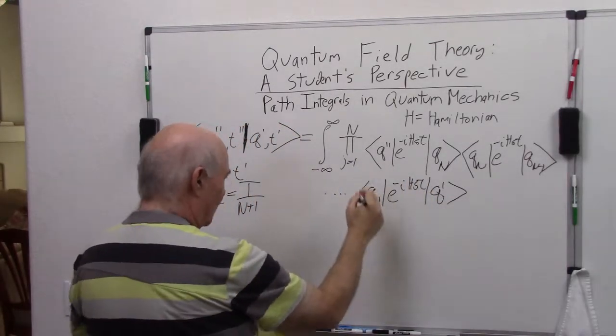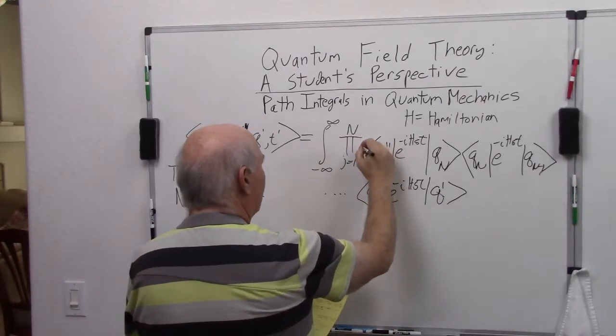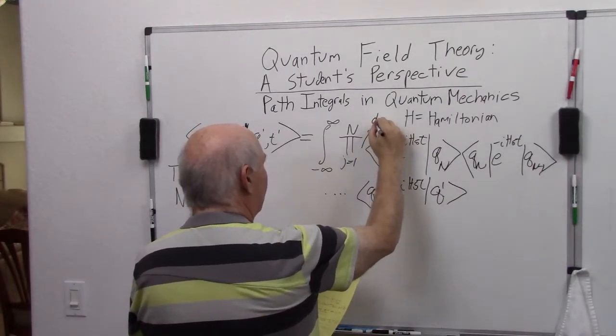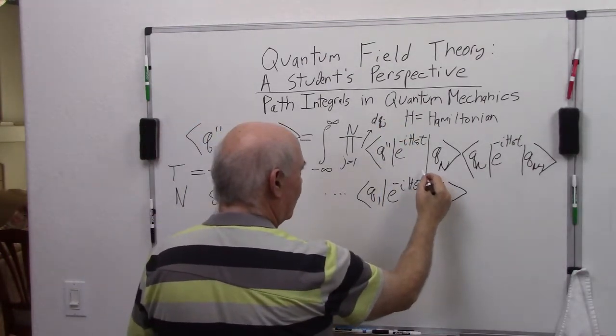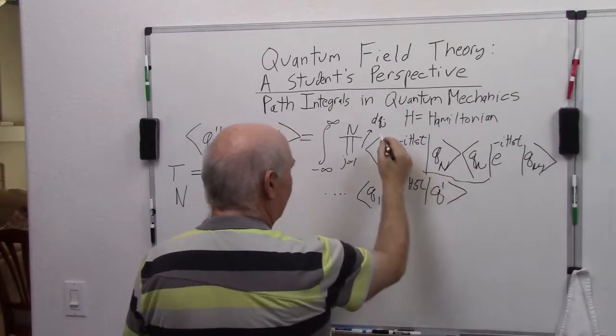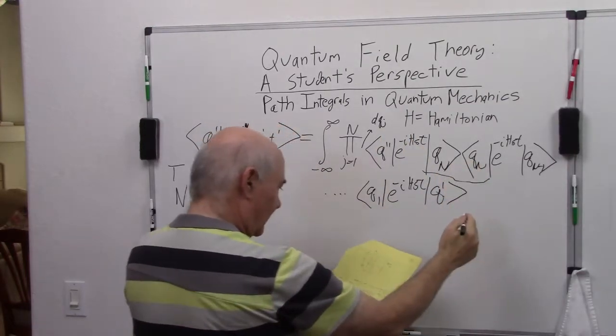The integrals, notice I left out the measure here, it should be d q j. Notice we have this and a q j. One of the j's is n, and this is just a complete set of states.